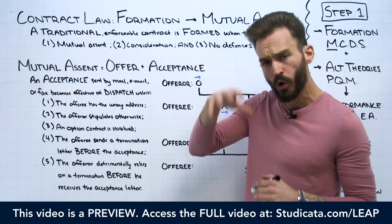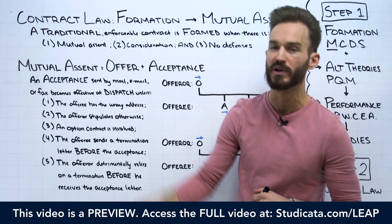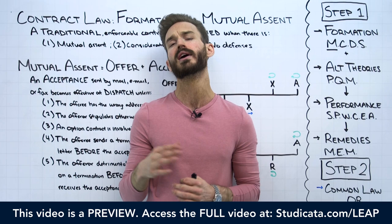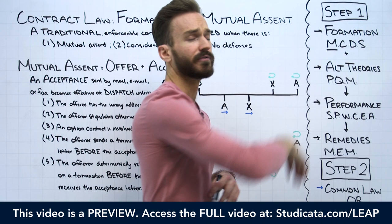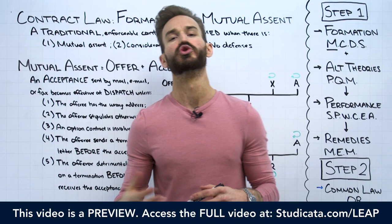Before we get into that, how do we go about forming a traditional enforceable contract? As a quick refresher, we have three elements: we need mutual assent between the parties, consideration, and no defenses to formation that would invalidate the otherwise valid contract. In our big picture flow of the contract law analysis, we're still right here under formation on the M in 'My Cat's Do Sneak,' which stands for mutual assent.